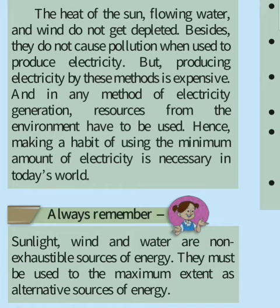The heat of the sun, flowing water, and wind do not get depleted — depleted means they will not be exhausted; you can use them any time. Besides, they do not cause pollution when used to produce electricity. But producing electricity by these methods is expensive.